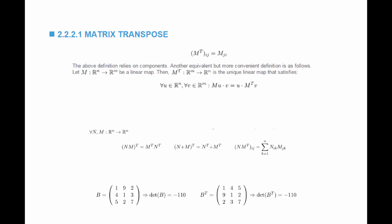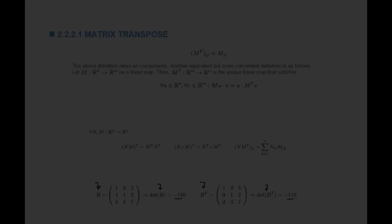The determinant of a matrix is equal to the determinant of its transpose, and I'm showing it here just using an example. This is the matrix B and this is the matrix B transpose. The determinant of B is equal to negative 110, and the determinant of B transpose is also equal to negative 110.